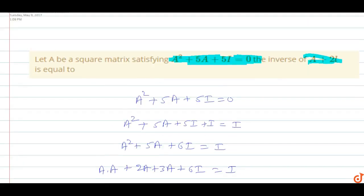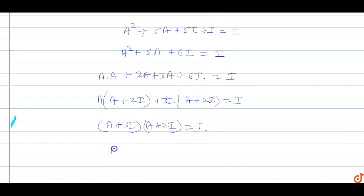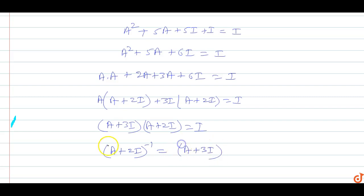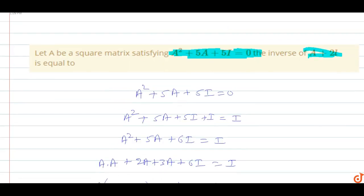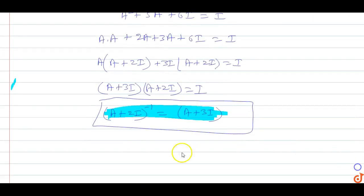We have to find the inverse of the (A + 2I) matrix. Since (A + 3I)(A + 2I) = I, the inverse of (A + 2I) equals (A + 3I). That is the answer for this question. I is the identity matrix.